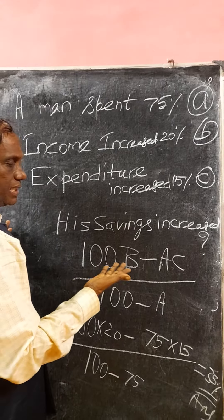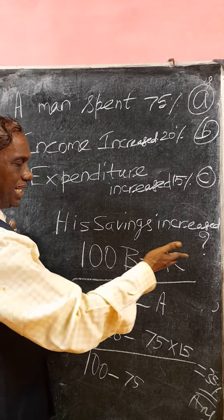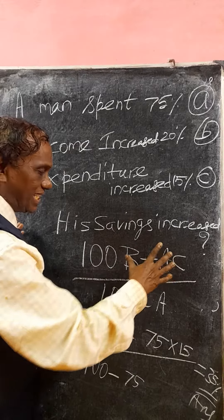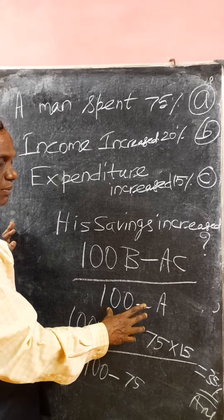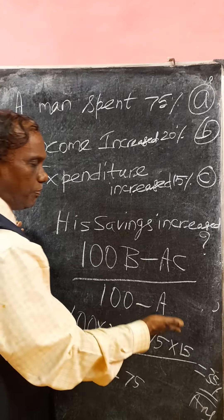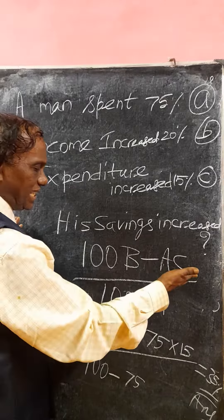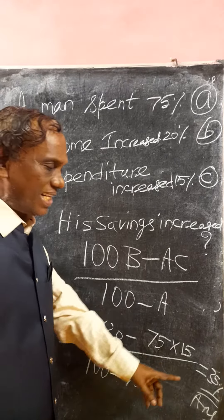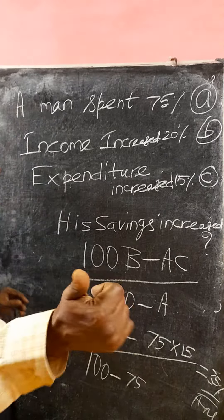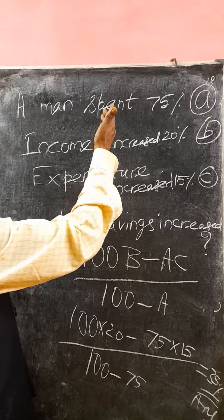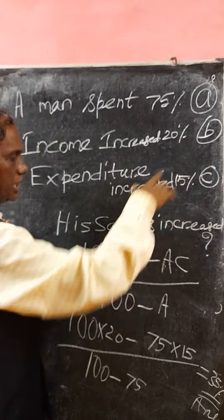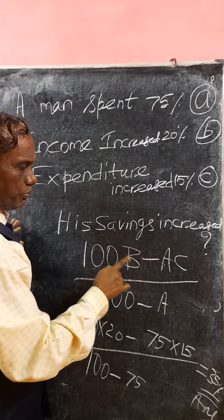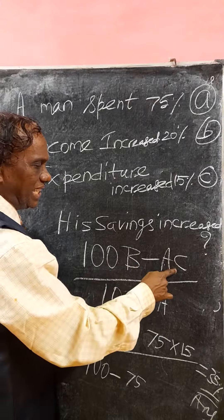Friends, this is the shortcut: 100B minus AC. You can remember it as 100B in the numerator, and in the denominator 100 plus A. So: 100B minus AC, divided by 100 minus A — answer ready!